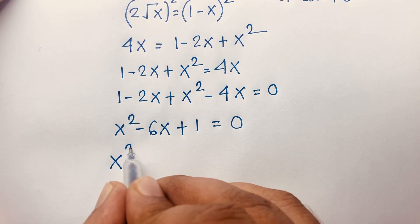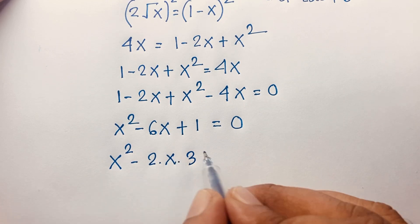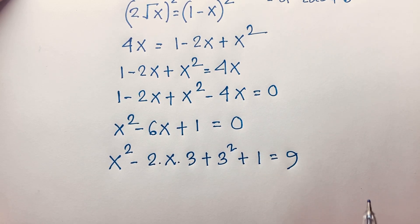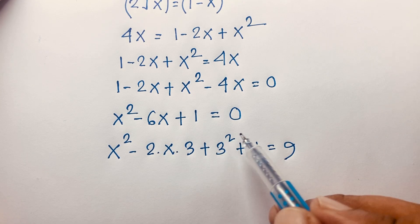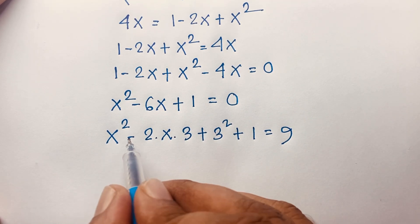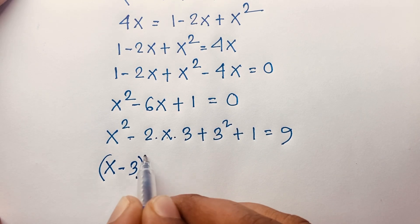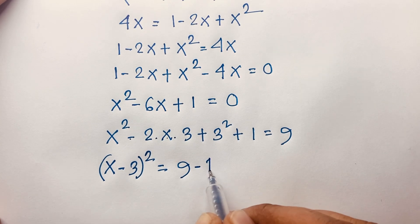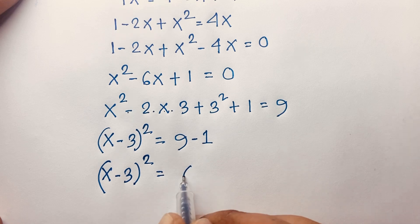Now I complete the square. We write x squared minus 2 times x times 3, and add 3 squared. Because 3 squared is extra, I subtract 9. Applying the formula a squared minus 2ab plus b squared equals (a minus b) whole squared, we get (x minus 3) whole squared equals 9 minus 1, so (x minus 3) squared is equal to 8.